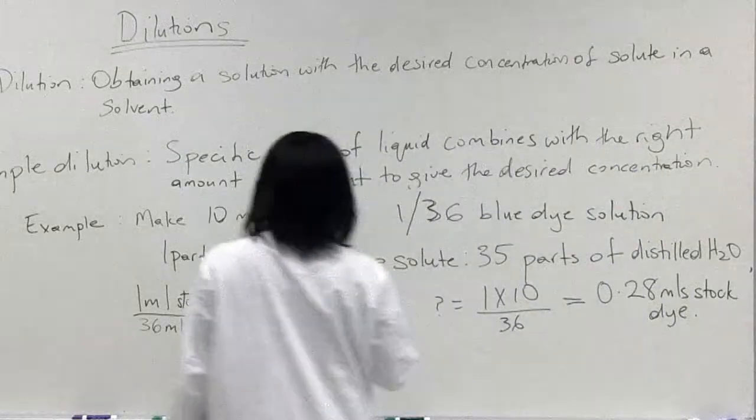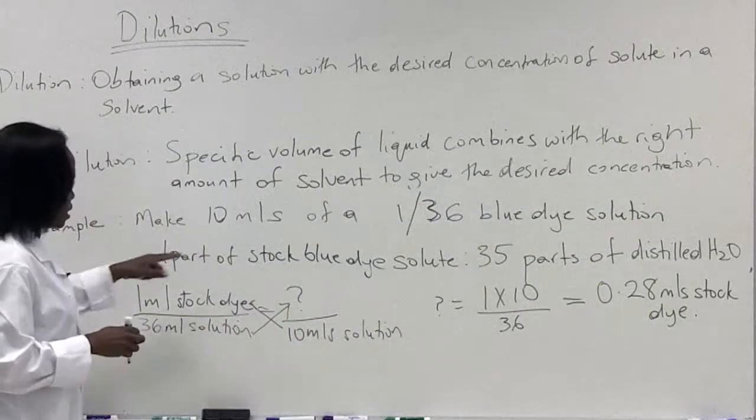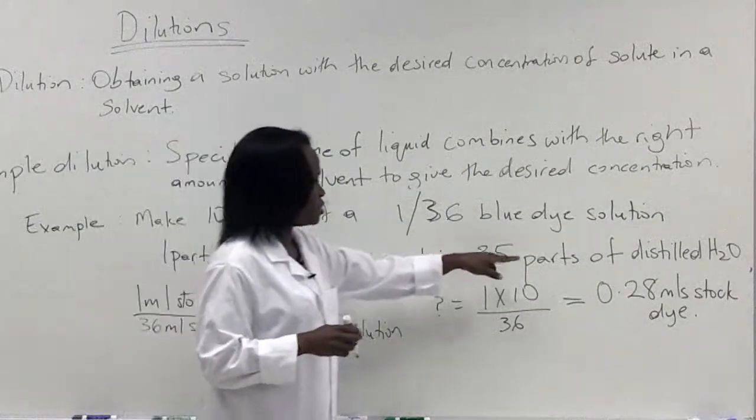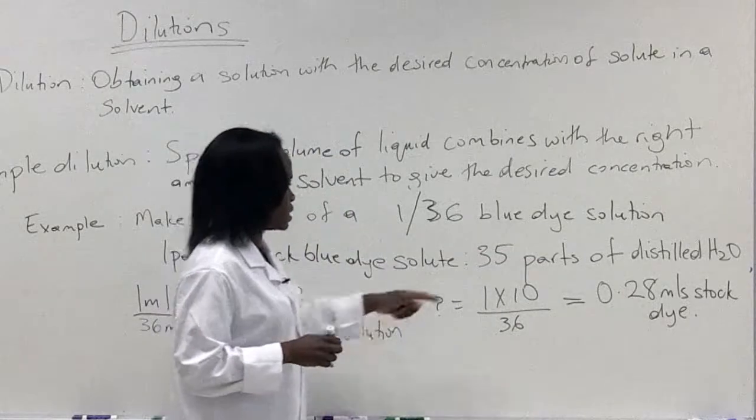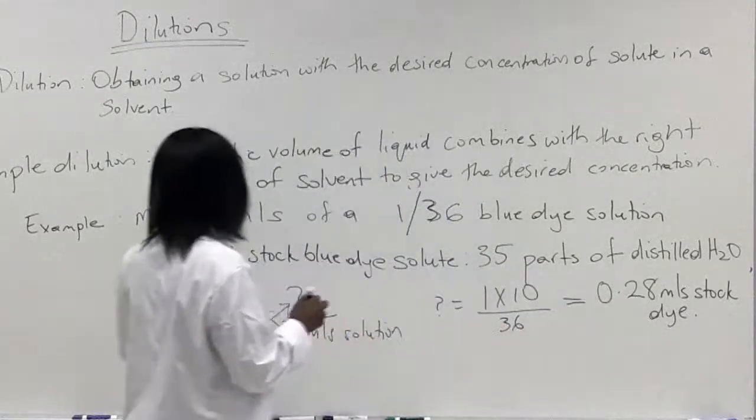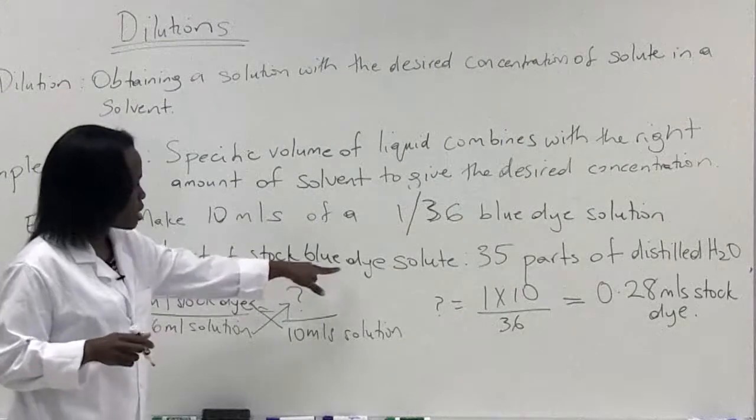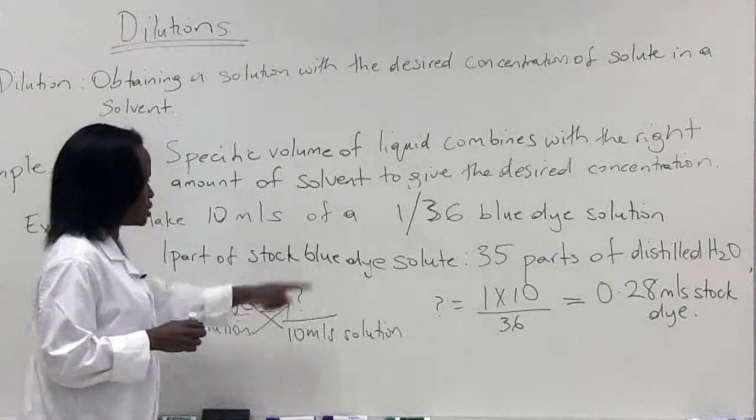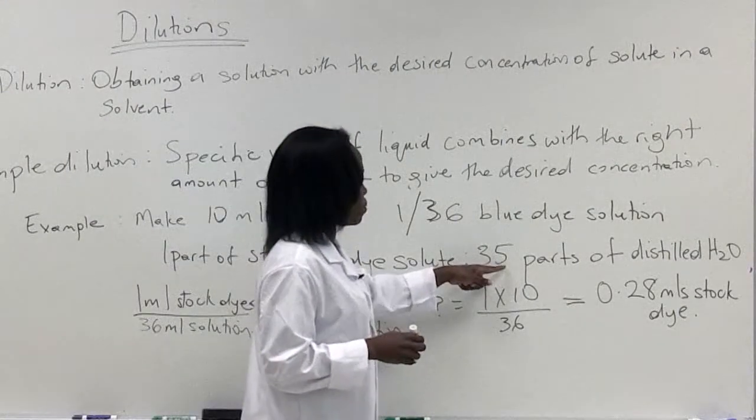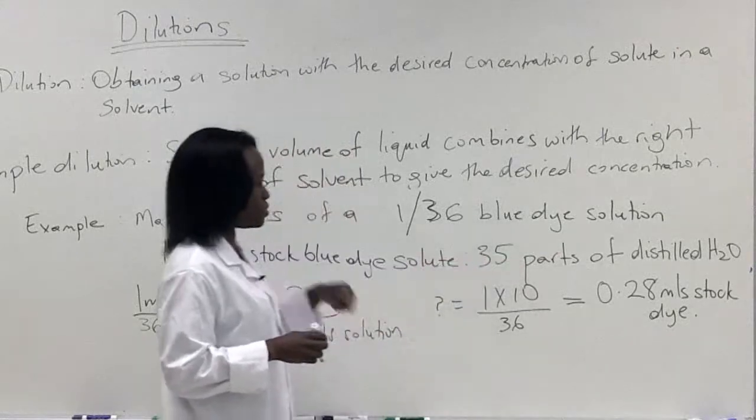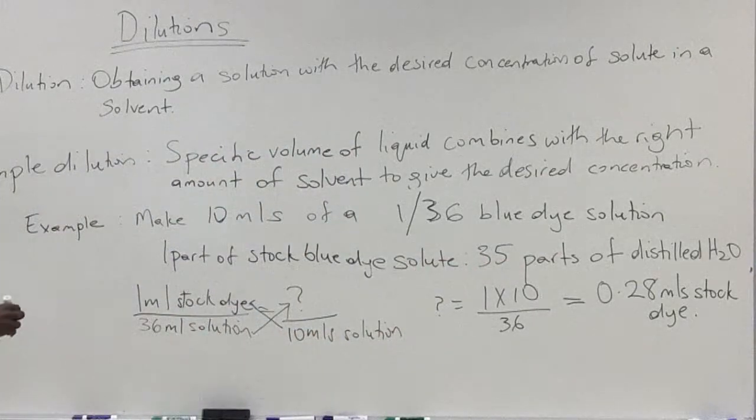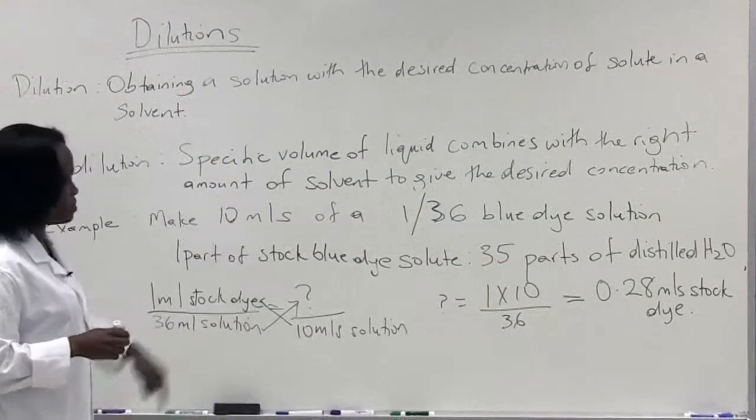If you recall, we're adding the dye, the stock dye, to water. But this is just telling you the part where you're adding one part of stock dye solute. You have to figure out what the 35 parts of distilled water is. Remember, your final volume is 10 mils.